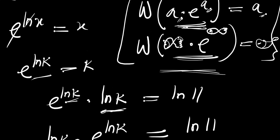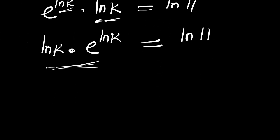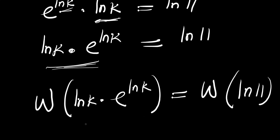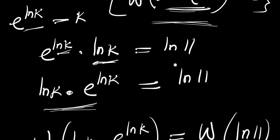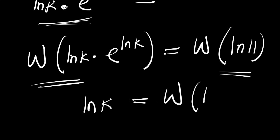At this point we can apply our Lambert W function, because this is exactly the form we need. We apply the Lambert W function to both sides: W of ln of k times e to the power of ln of k equals W of ln of 11. Based on the property, the left side simplifies and we get ln of k equals W of ln of 11.